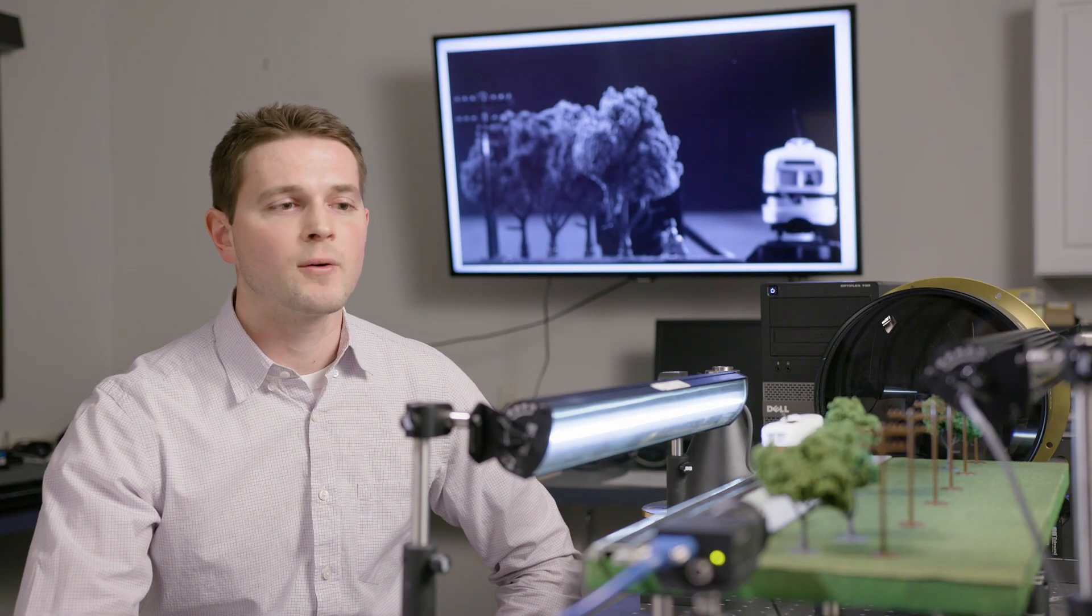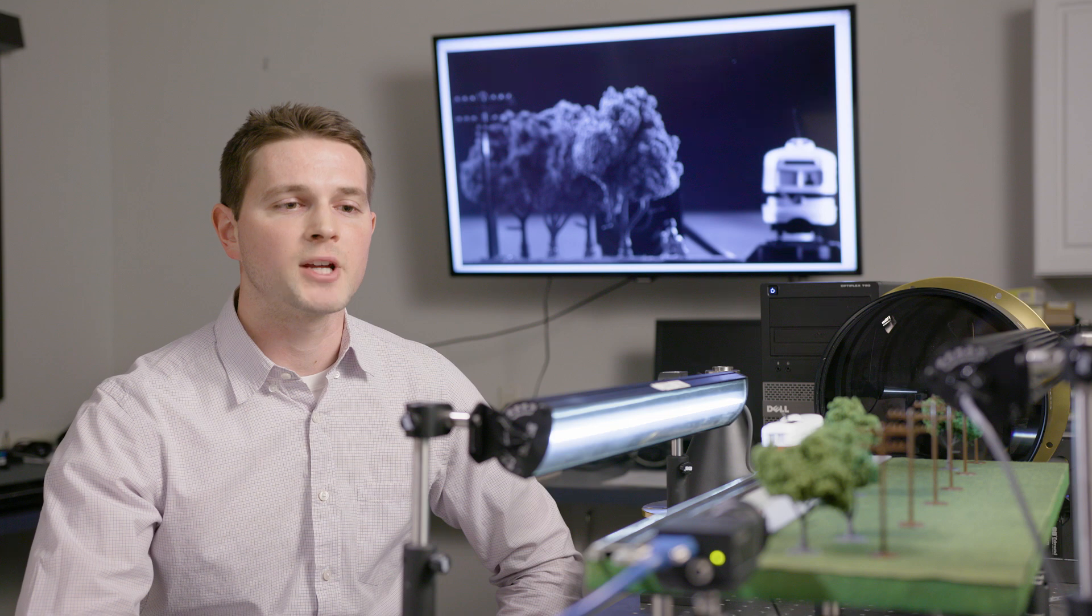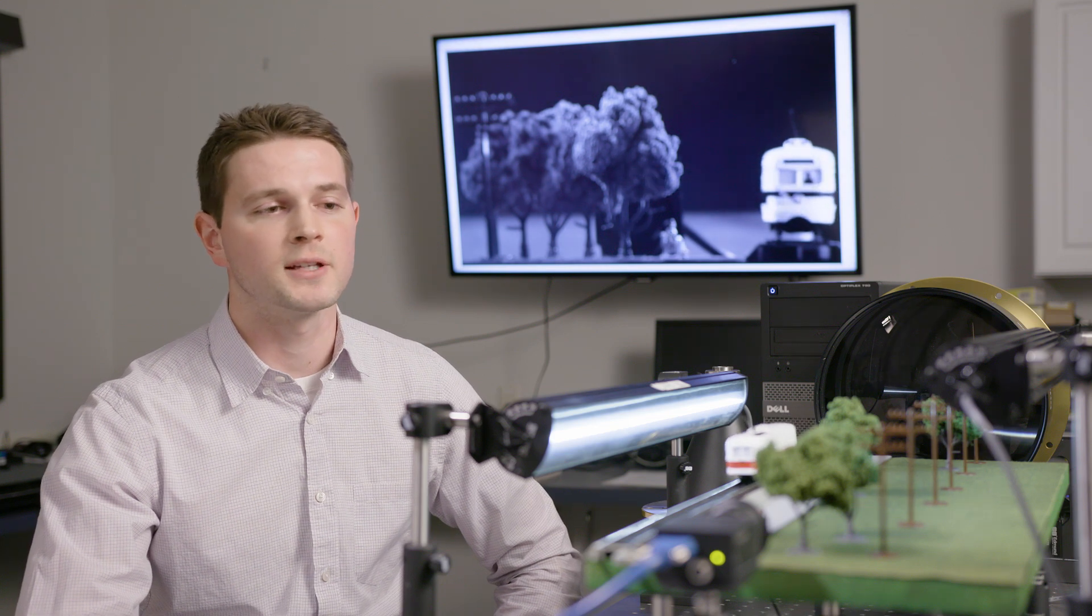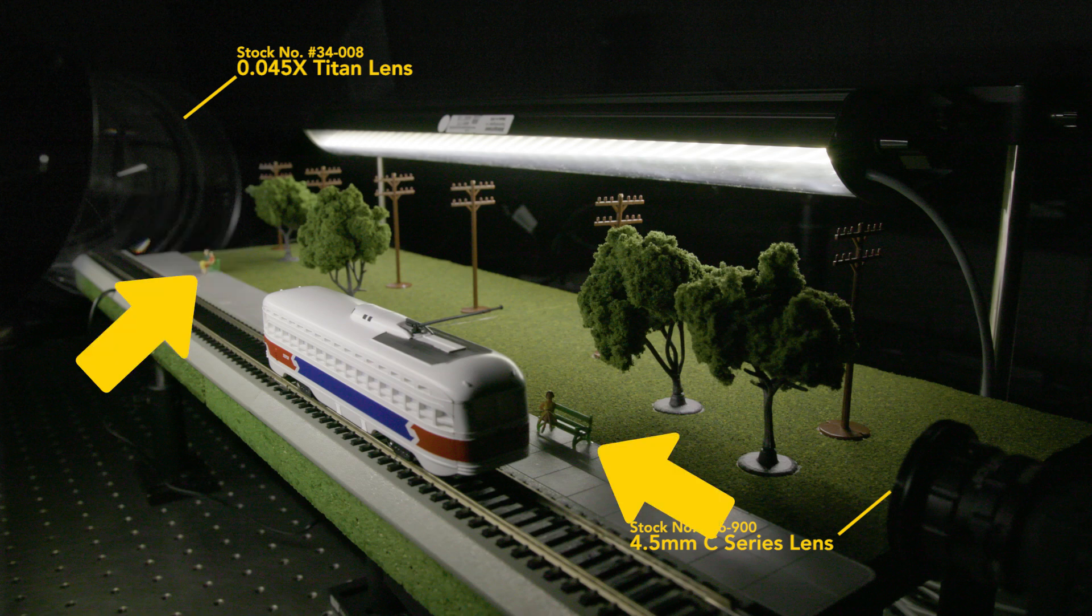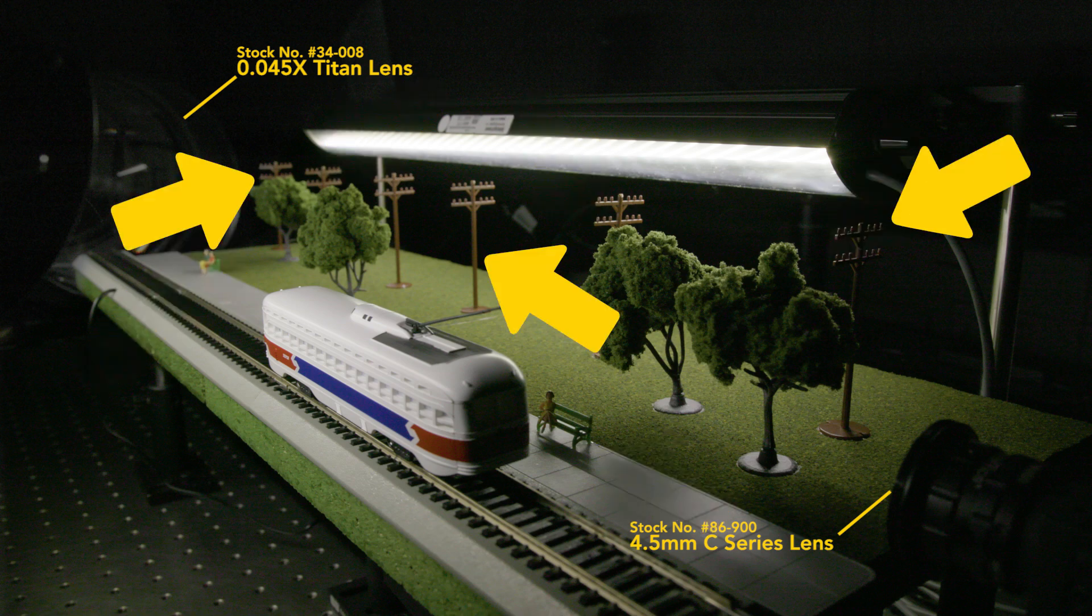This scene is designed to show how a telecentric lens would view an object in comparison to a fixed focal length lens. There are four different main features of this scene: a train, people sitting on park benches, trees, and telephone lines.